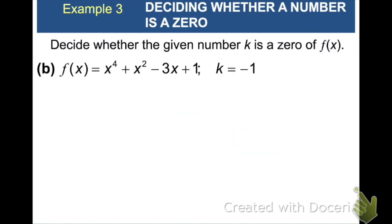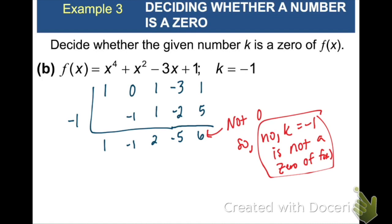I want you to pause your video and try part b. Find out if k equals negative one is a zero of f of x. I hope you remember to put the zero there for the x to the third term. So after I did synthetic division, I got six as my remainder. Since six is not zero, my answer here is going to be no, k equals negative one is not a zero of f of x.